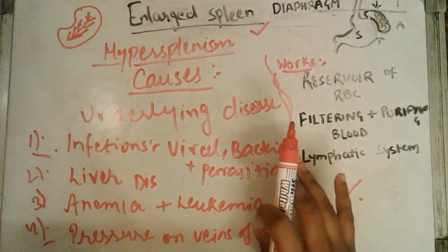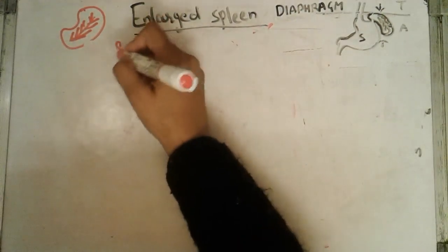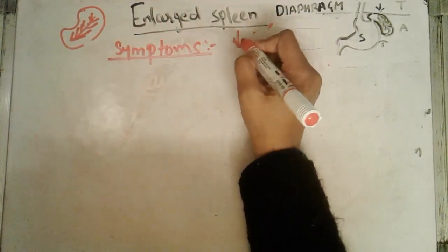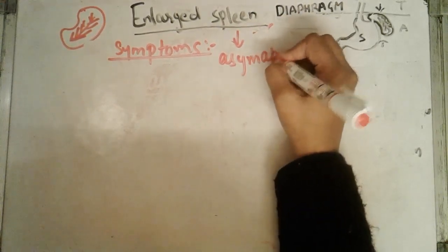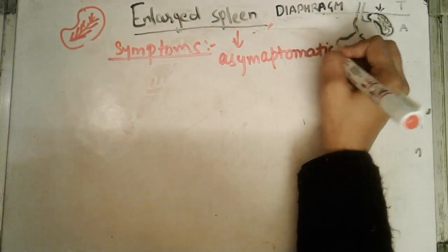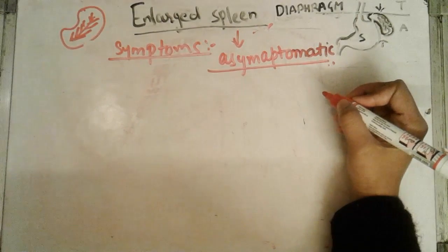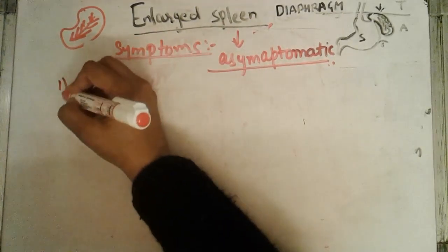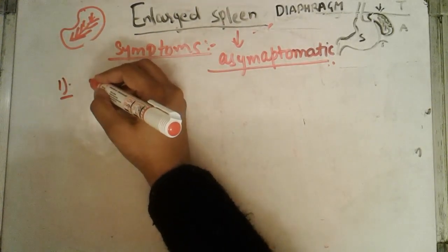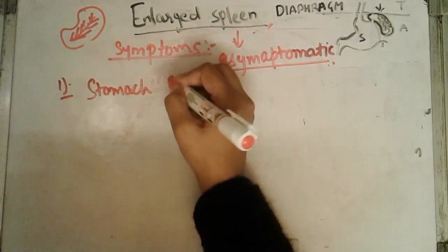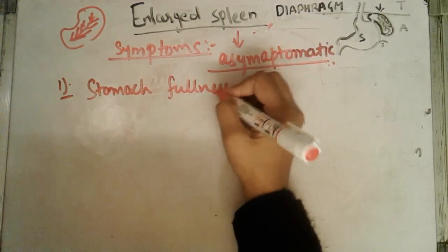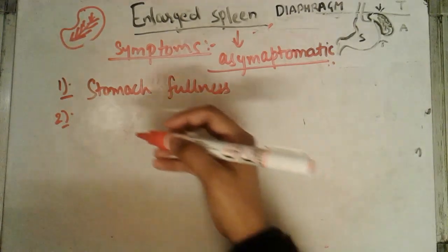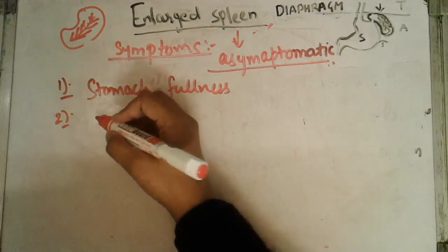Enlarged spleen is usually asymptomatic — it usually doesn't show any symptoms. However, you can identify it through various symptoms such as fullness of the stomach: whenever you eat small meals, your stomach will feel full. It can also cause stomach pain, and patients can suffer from anemia and fatigue.